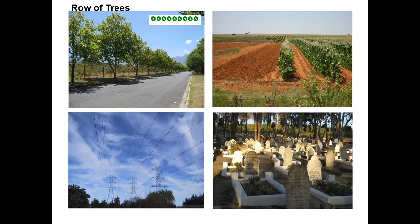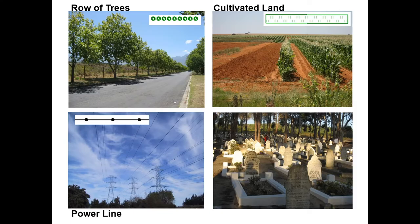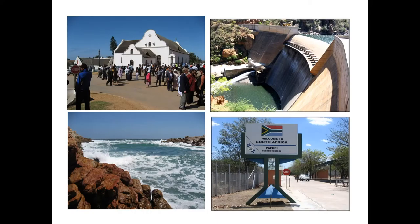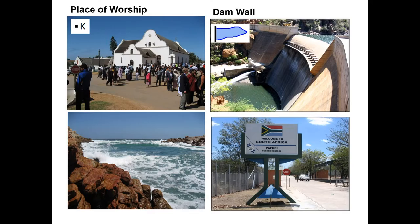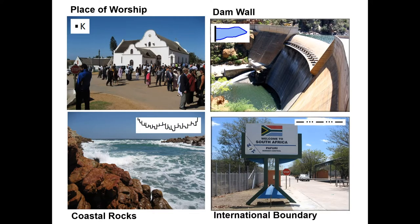A row of trees, cultivated land, power line and a cemetery. Over here we have our place of worship. It is indicated by 'K', which has reference to the Afrikaans word 'kerk'. We then have our dam wall, our coastal rocks and our international boundary.